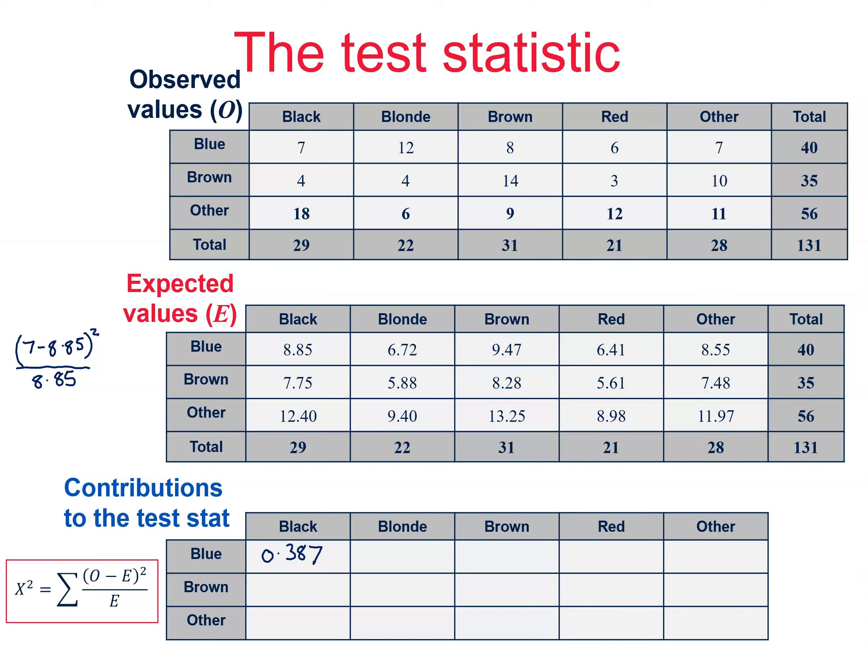Okay, for blonde hair and blue eyes, you should have got 12 minus 6.72 all squared divided by 6.72, and that is 4.149 to 3 decimal places. The rest of the values are given here, so pause the video and check the ones that you did.